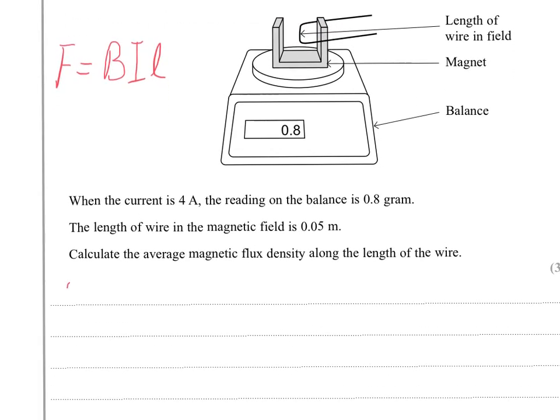Okay, so firstly, F equals BIL is what we're looking at here. But F also equals MG from the reading on the balance. So we can put those two things equal to each other, and then we should just rearrange that for B and then substitute and find the answer.